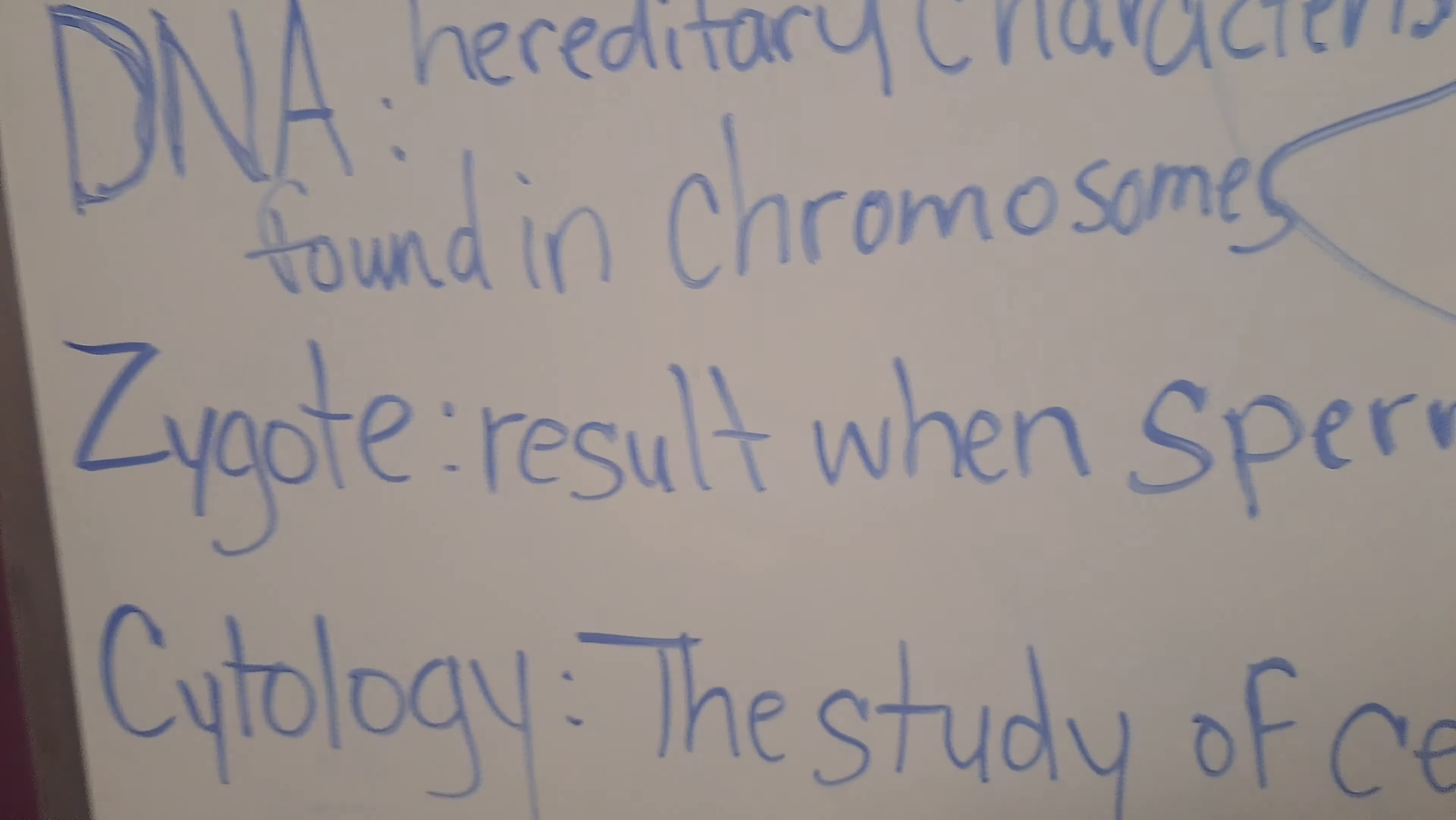The next set of definitions: electrolytes are substances that when they dissolve form electrically charged particles. Hormones are a chemical formed in tissues or organs and they're carried by blood. They stimulate or inhibit the function of another tissue or organ. The nucleus, this one is pretty easy, it's one of the largest organelles and it directs all cell activity. It also has its own membrane.